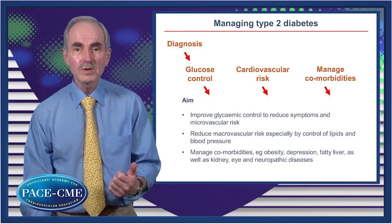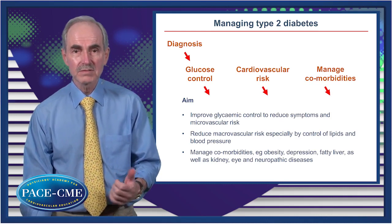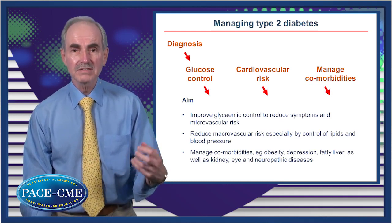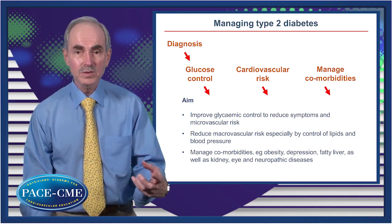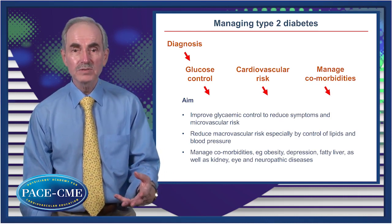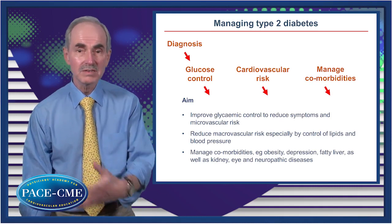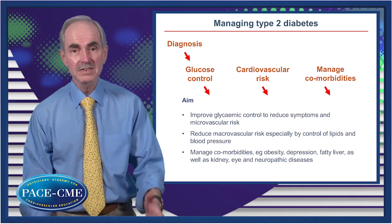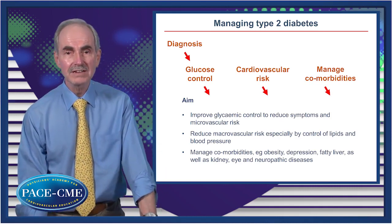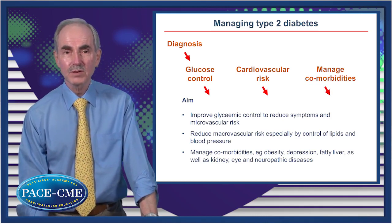We also want to reduce macrovascular risk, so quite independently in most cases, there'll be control of lipids and blood pressure. And then we'll need to manage the comorbidities — obesity, depression, fatty liver, and so forth — as well as the standard microvascular complications.